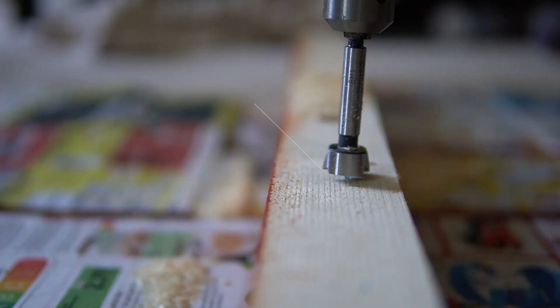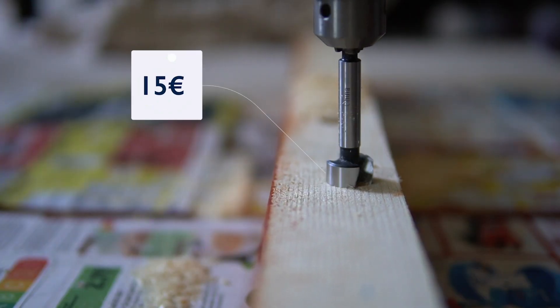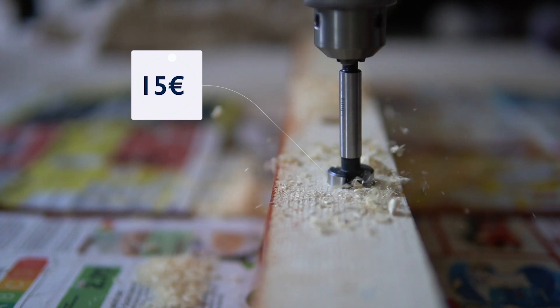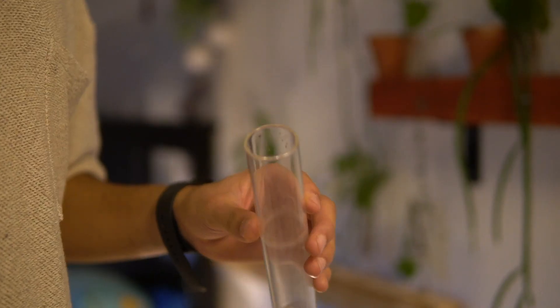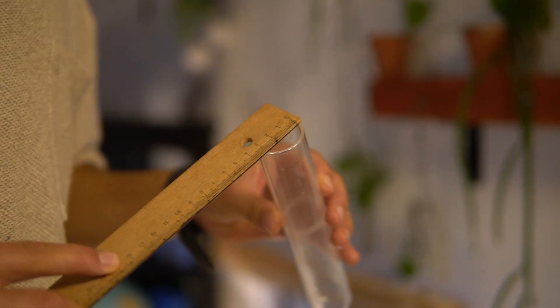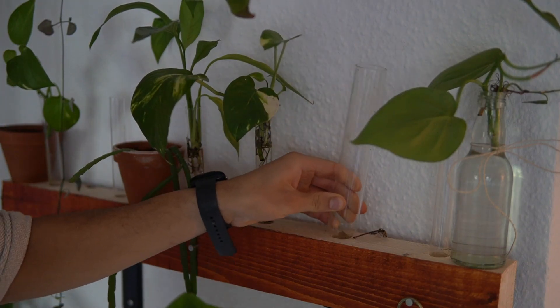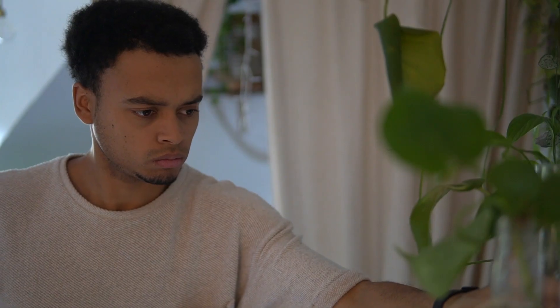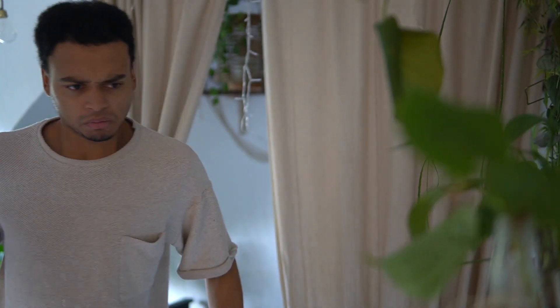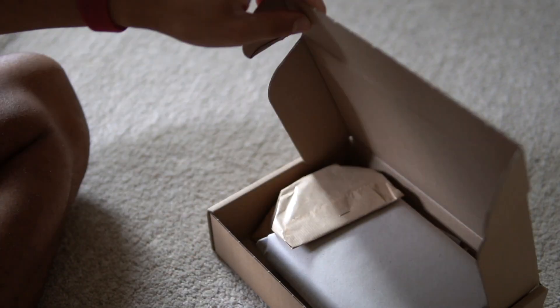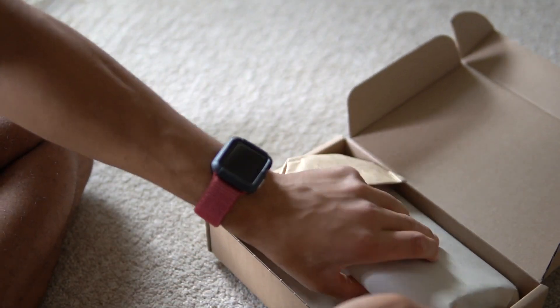The easiest DIY method to get those perfect holes is to use a Forstner bit. Here in Germany they cost around 15 euros, so there shouldn't be much more expensive where you live. What is important is that you want to measure out the diameter of your glass containers or your test tubes before, and then get the suitable Forstner bit, because trust me, there's nothing more frustrating than drilling the holes and then finding out that your tubes don't fit. The tubes I got are from Amazon, by the way—link is down in the description—and some are from IKEA.